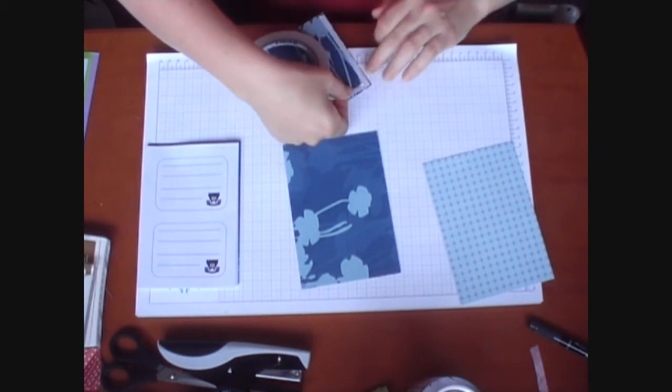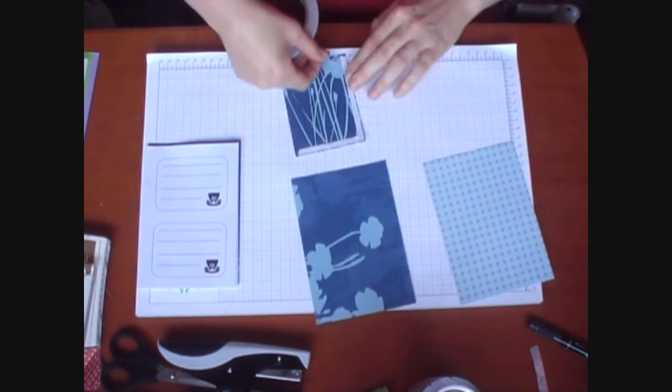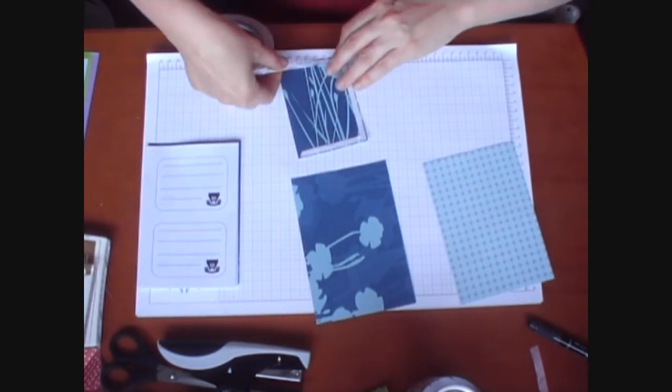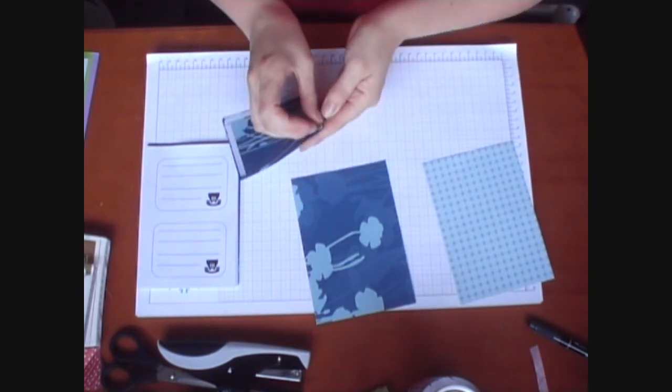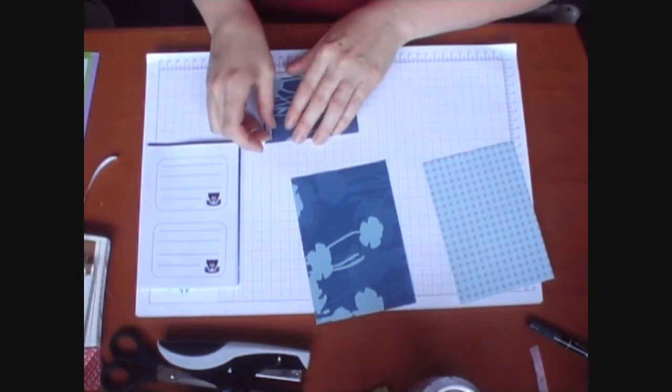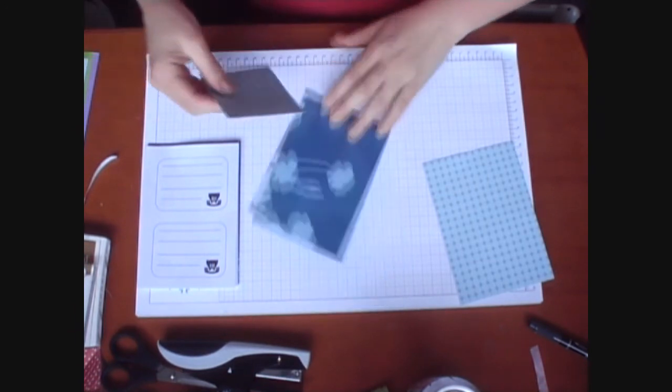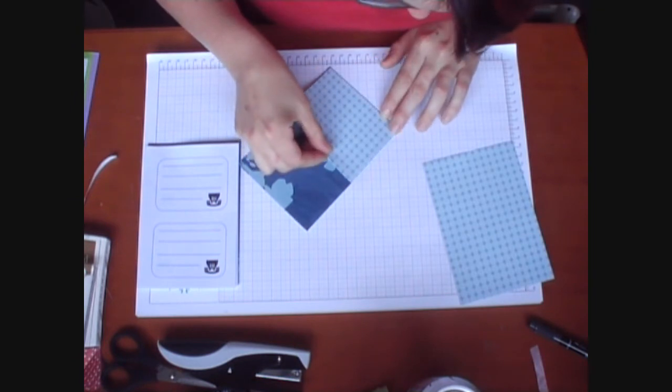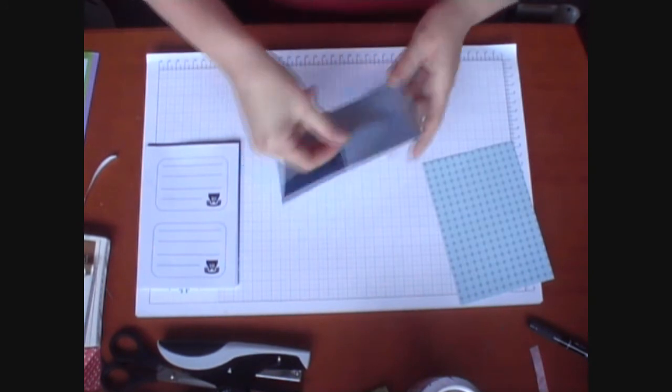And leave the top edge open so the little pocket we can pop any little pieces of paper we might need to in there. I'll just line this up on the outside edge. So there are little pockets in there.